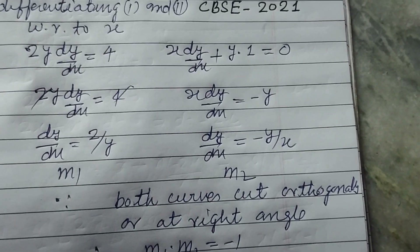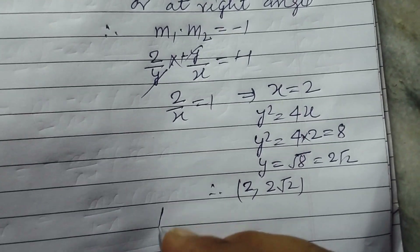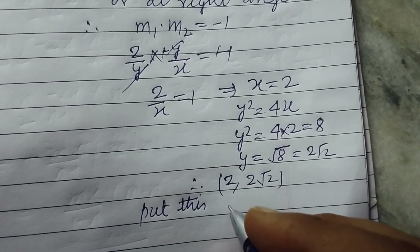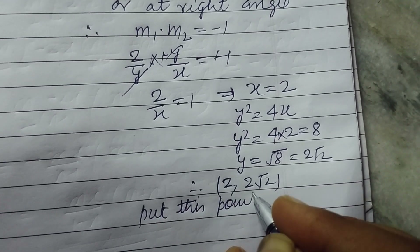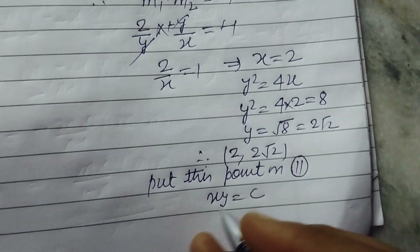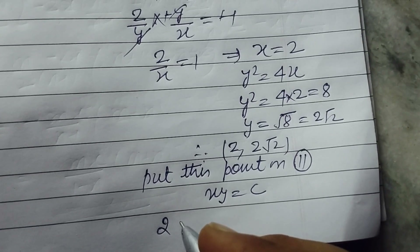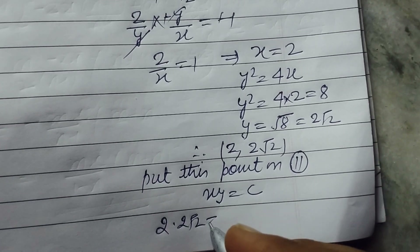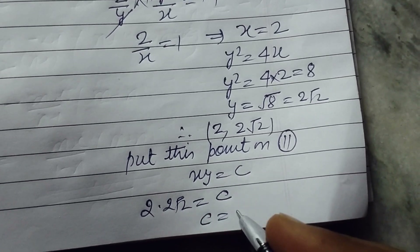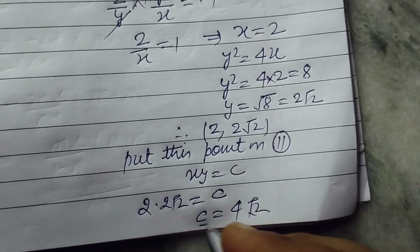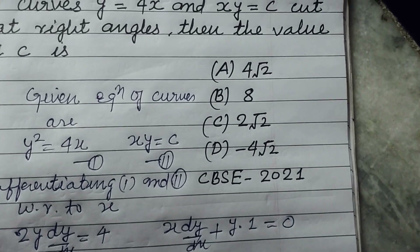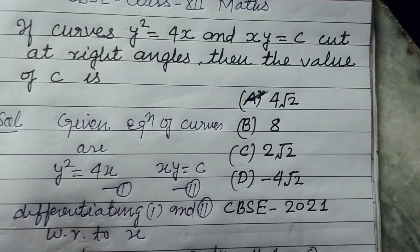Since this point lies on the second curve, we substitute into xy = c: x = 2 and y = 2√2, so c = 2·2√2 = 4√2. So 4√2 is the answer to this question, which is found in option A.